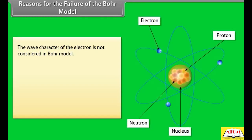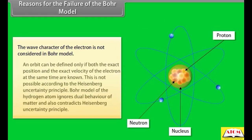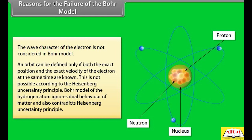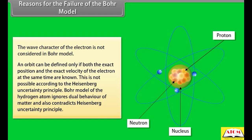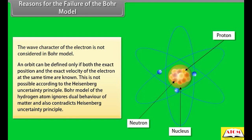Reasons for the failure of Bohr's model: The wave character of the electron is not considered in Bohr's model. An orbit can be defined only if both the exact position and the exact velocity of the electron are known simultaneously, which is not possible according to the Heisenberg uncertainty principle. Bohr's model ignores the dual behavior of matter and contradicts the Heisenberg uncertainty principle.